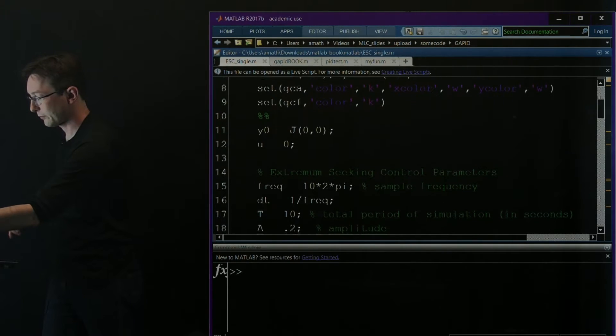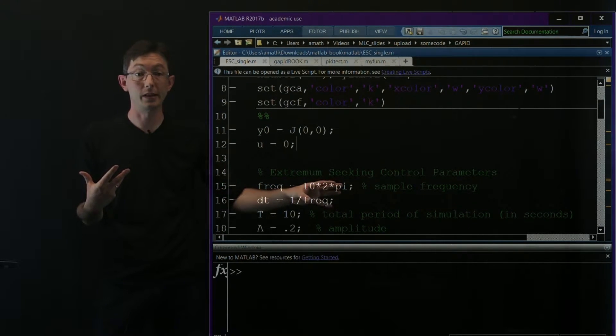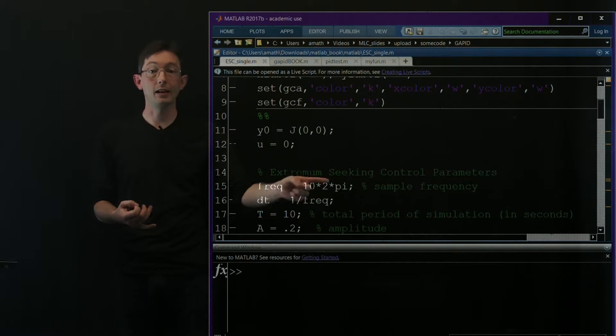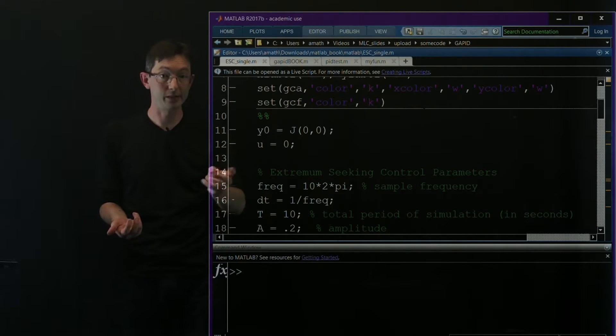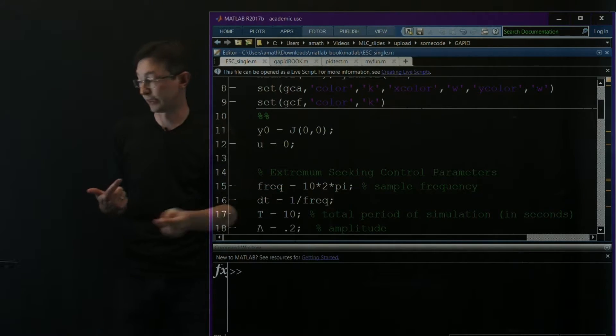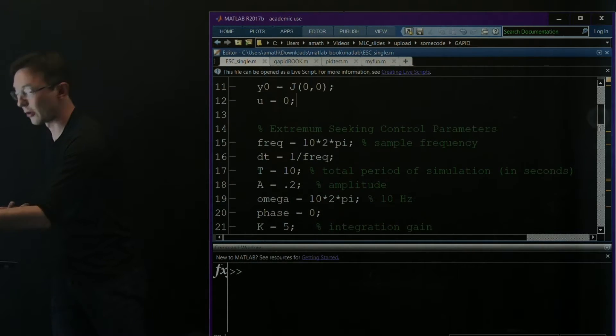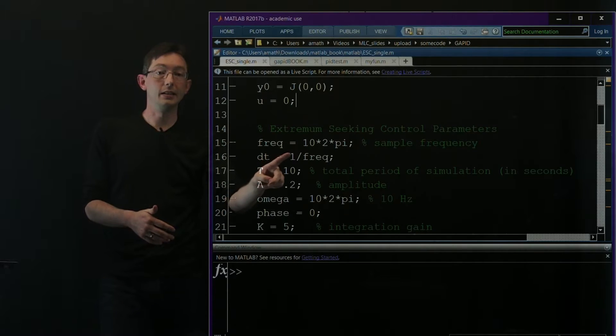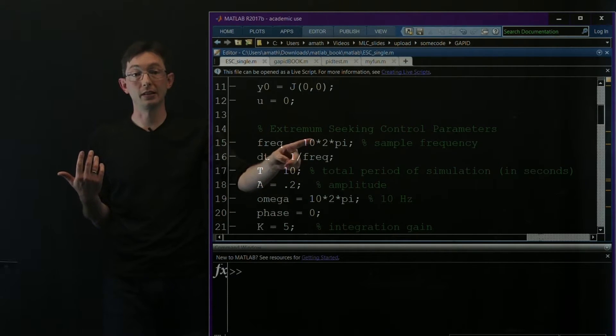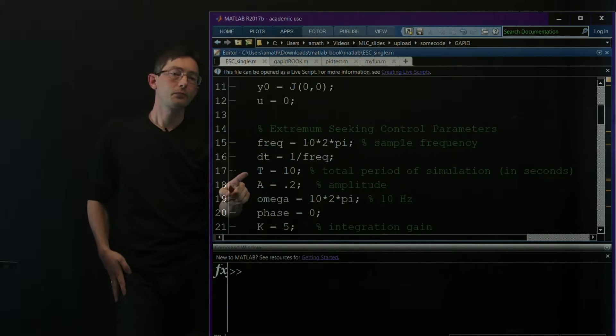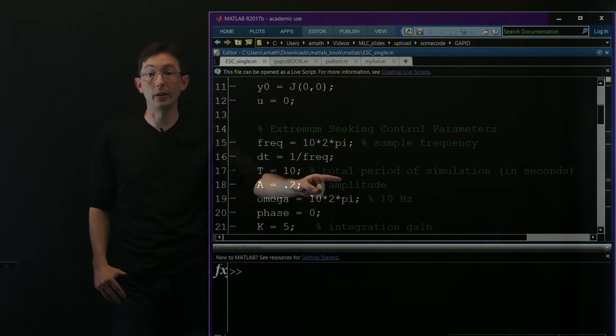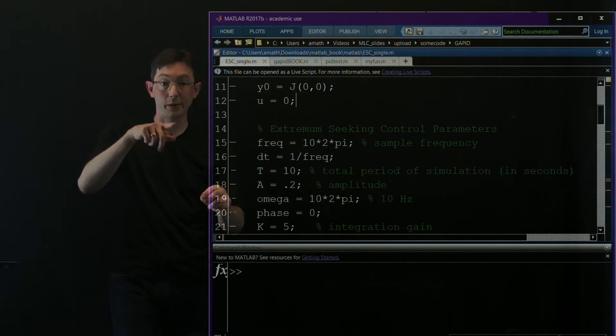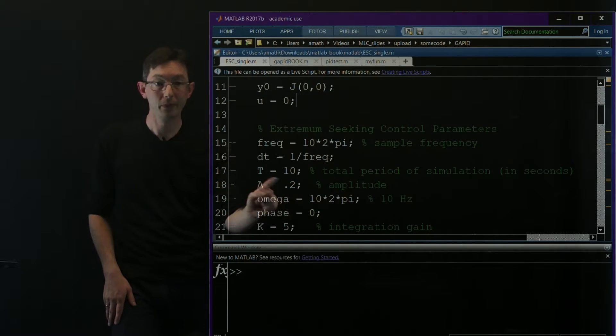Okay so now what we're going to do is we're actually going to start designing an extremum seeking control. What do I need to design an extremum seeking control? I need to design the sampling frequency, so I need to know how fast I'm actually sampling the system. Essentially I'm going to act like this is a discrete time system where I take samples at fixed delta t's, so dt equals 1 over the frequency which I've chosen to be 20 hertz. I need to pick a time for how long I'm going to run my simulation, in this case t equals 10.